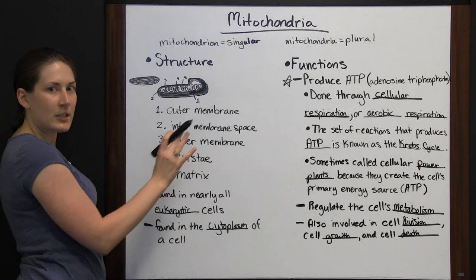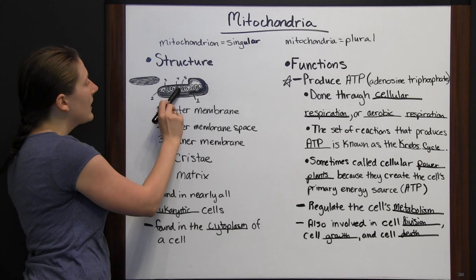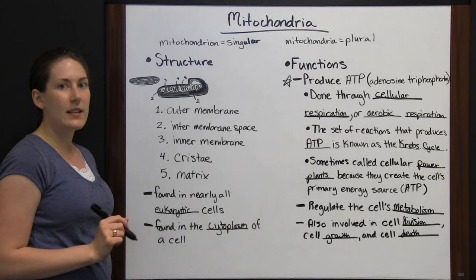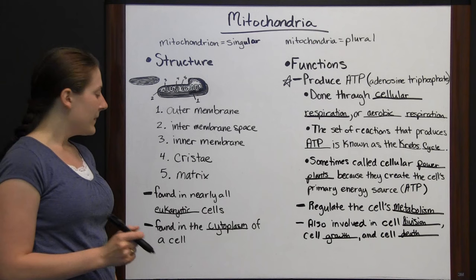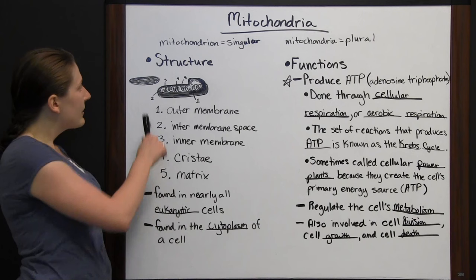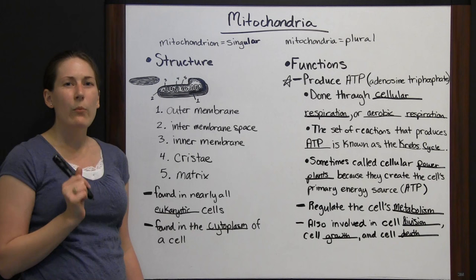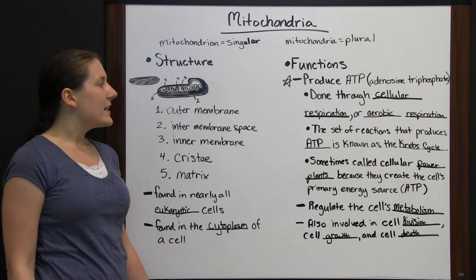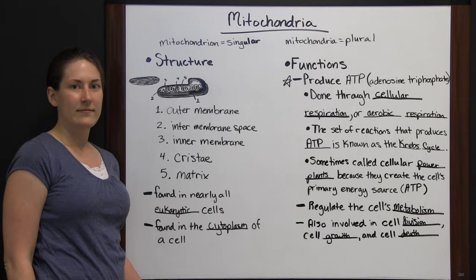To summarize the structure: outer membrane, intermembrane space, inner membrane surrounding the matrix, with cristae forming in the folds of the inner membrane. Mitochondria are found in almost all eukaryotic cells in the cytoplasm. If you're looking at a cell diagram, look for the little jelly bean shape — and remember, the mitochondria is your power plant of the cell.